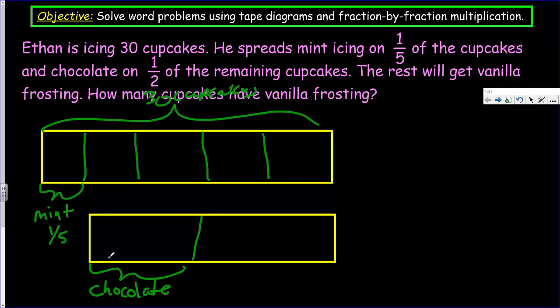But then what does it say? It says the rest will get vanilla frosting. Aha. So this here will be then the vanilla because that's the remaining. And it happens to be half. This is half of them are chocolate. And so we could go ahead and put a question mark here because we really don't know how many we have here.